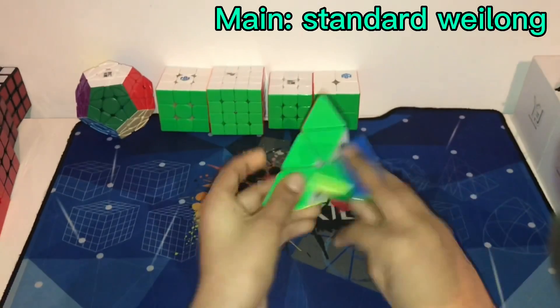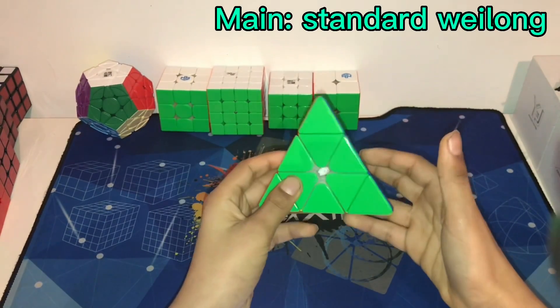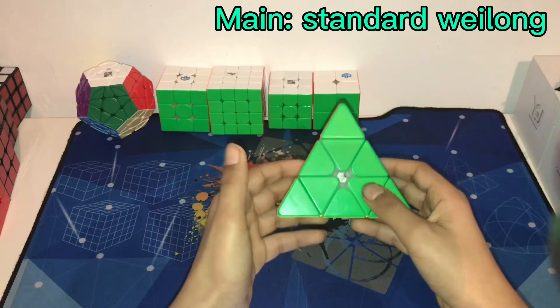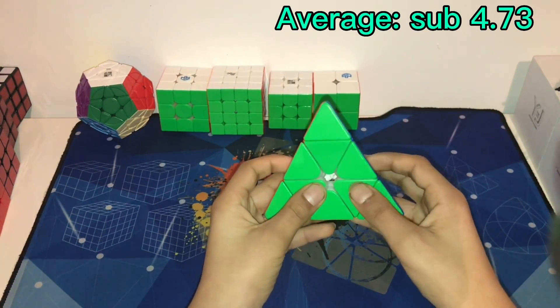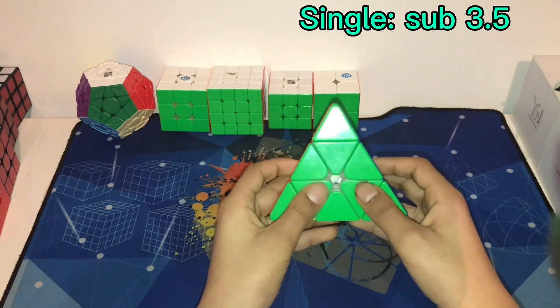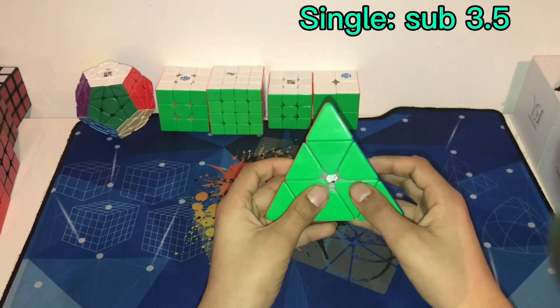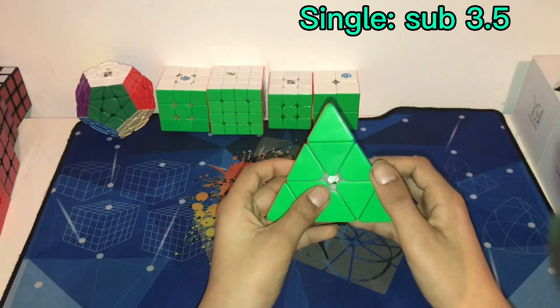Okay, let's move on to Pyraminx, my main event for this comp, and I'll explain why in a bit. I'm going to main the standard Waylong Pyraminx, and I'm hoping for an average sub 4.73, which is my official PR. Shouldn't be too hard, but I only have 2 chances for it. I don't care much about single. My PR is okay, it's 3.32, so I'm just gonna go for a sub 3.5.